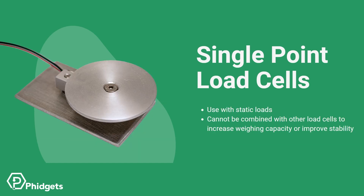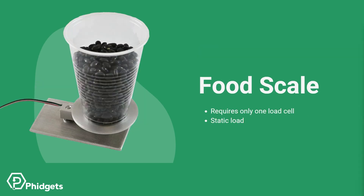These load cells are better suited for static loads. Because of their design, strong impact forces or repeatedly overloading the load cell can result in permanent deformation or even destruction of the load cell. It's not recommended to use these load cells in parallel, which would make the system more complex — there are load cells better suited for that. An example application for a single point load cell is a food scale for measuring the weight of ingredients for cooking or baking.